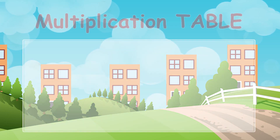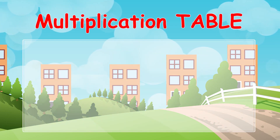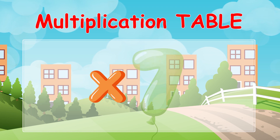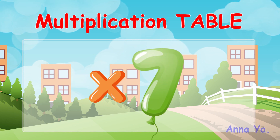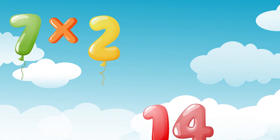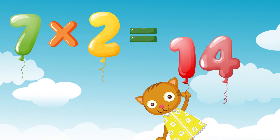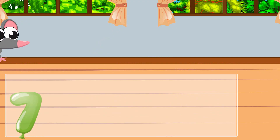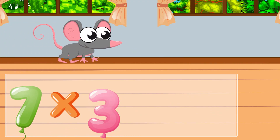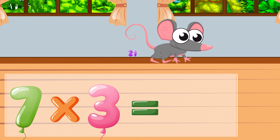Seven times table. Seven times two is fourteen, seven times three is twenty-one.